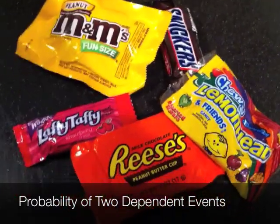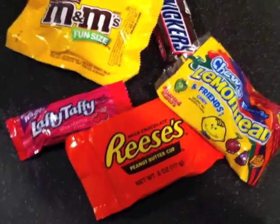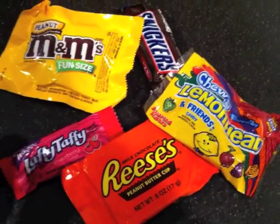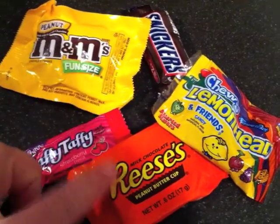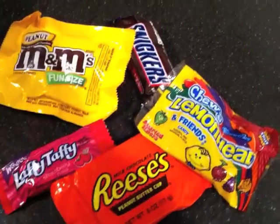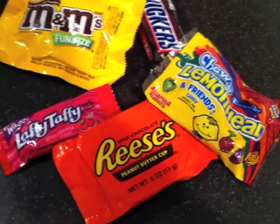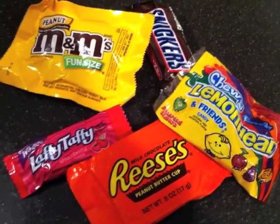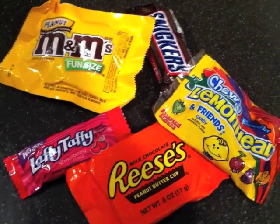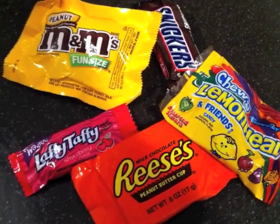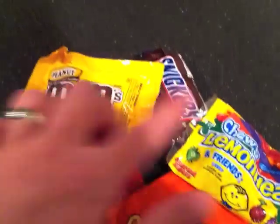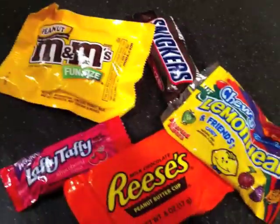Here's an example for the probability of two dependent events. I have a pile of candy, and three of the pieces are chocolate. A friend comes over and picks a piece of candy at random, and the chances of him picking a chocolate candy would be three to five — three pieces of chocolate out of five pieces altogether.